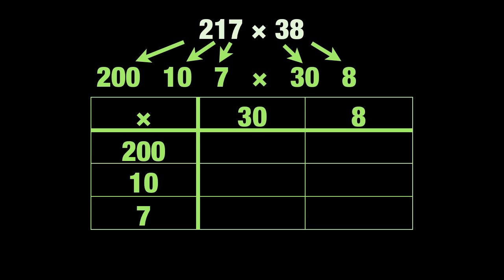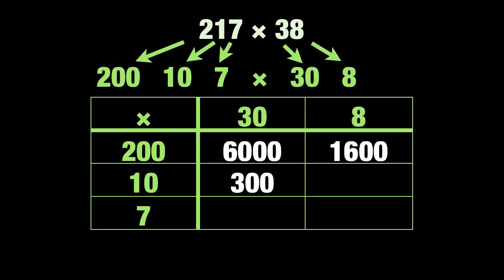Let's fill in the rest of the boxes. 200 times 30 is 6000. 200 times 8 is 1600. 10 times 30 is 300. And 10 times 8 is 80. 7 times 30 is 210. And 7 times 8 is 56.